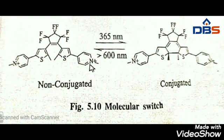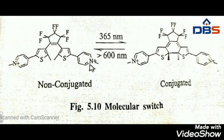Molecular switches are classified into two types: one is the photo-regulated molecular switch, and the second one is the chemically controlled molecular switch. An electrical switch is an important element for regulating electron flow. Direct connection and disconnection between lead wires is usually used to regulate electricity flow.